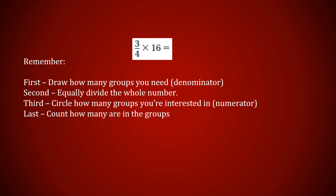How about three-fourths of 16? Four is my denominator, so I have four groups. I need 16 total dots — 16 divided by 4 is 4, so I've got four in each group. We're counting three of those groups: four plus four plus four gives me 12. The math: 16 divided by 4 equals 4, times 3 equals 12.